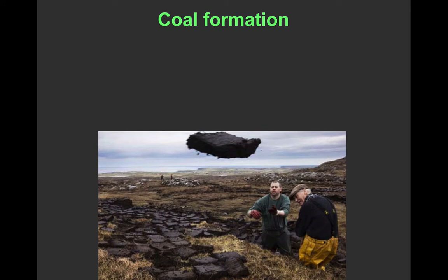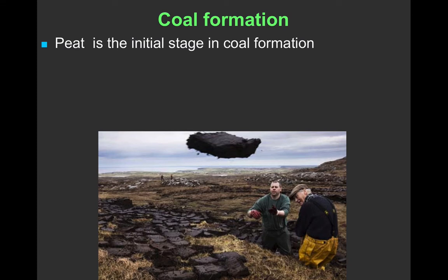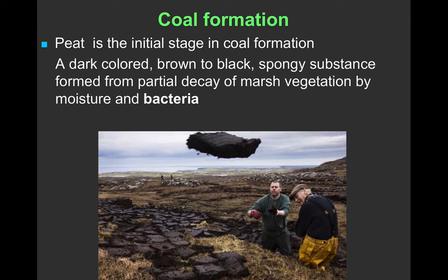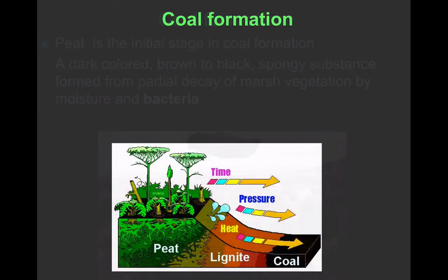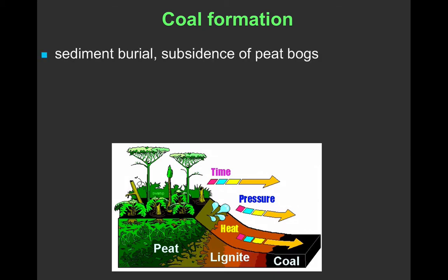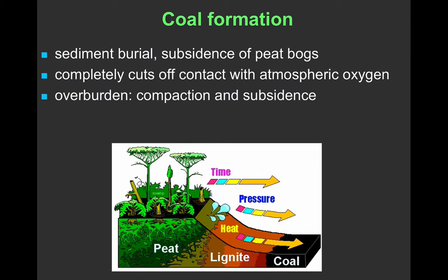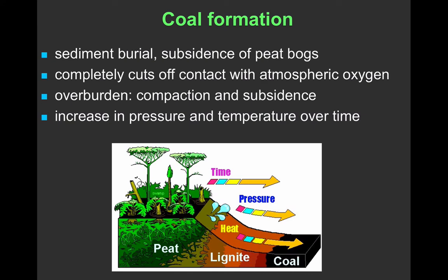Coal formation happens in stages. The first stage is the formation of peat — this partially decomposed organic material, still used as a fuel in some of the remoter parts of the UK. It's dark in colour, quite spongy, contains a lot of water, and will perhaps have some recognisable plant features within it. Over time, with pressure and some heat, these peat bogs subside as sediment is buried on top. That excludes all oxygen and prevents further decay. The weight compacts the material, and as it gets pushed deeper, we see increased pressures and temperatures, leading to changes in both the composition and texture of the organic material.